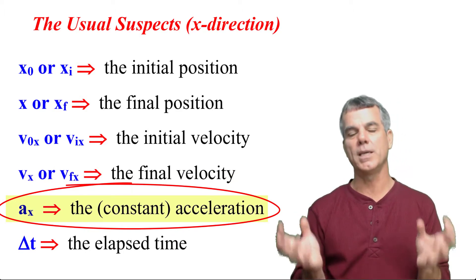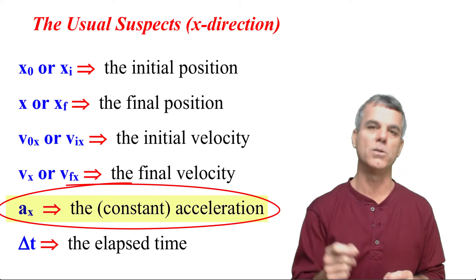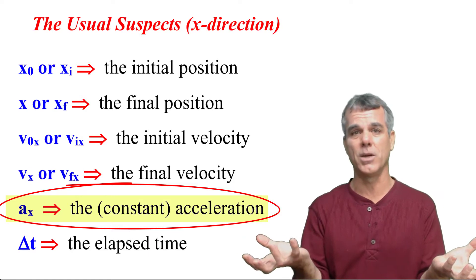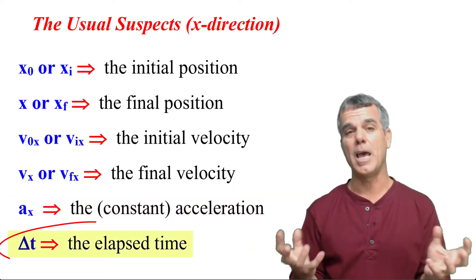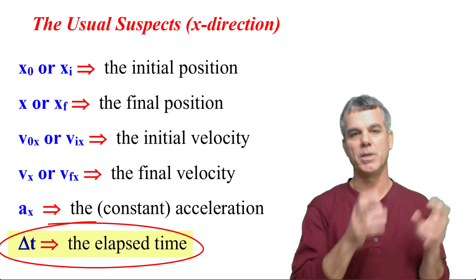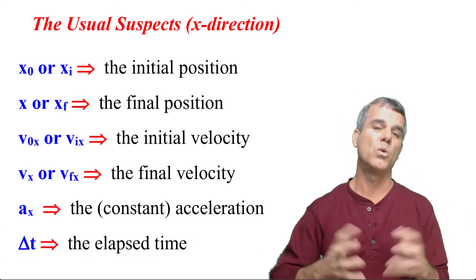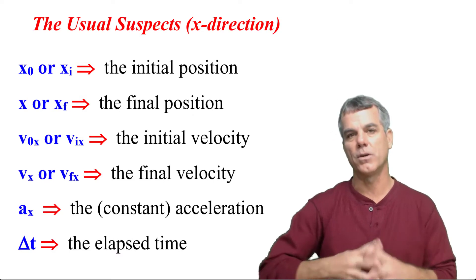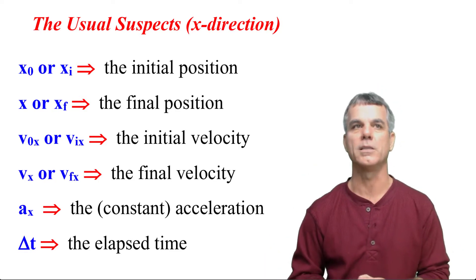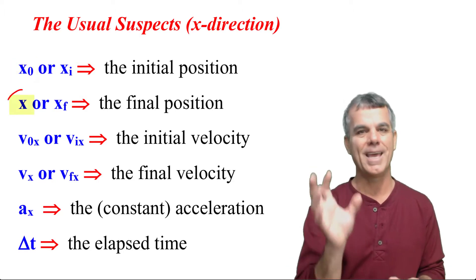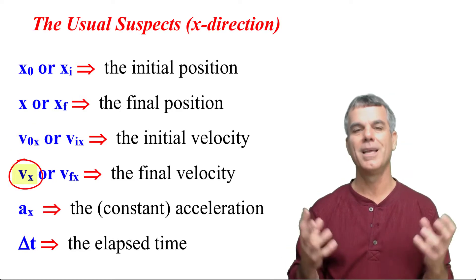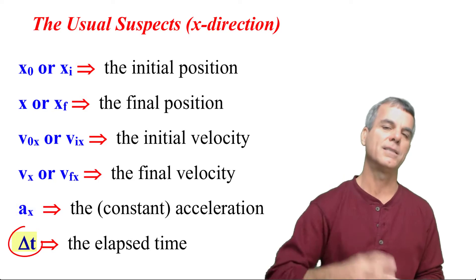Acceleration — we assume the acceleration is constant. That's the only way we can use these equations of constant acceleration, which means there is no initial acceleration and final acceleration because the acceleration does not change. Elapsed time is really just t final minus t initial — it's how much time has elapsed since the beginning of my event and the end of my event. In one dimension, we can look at either horizontal or vertical motion. In the x direction, I'm going to use x0 for initial position, x for final position, v0x for initial velocity, vx for final velocity, ax for acceleration, and delta t for elapsed time.